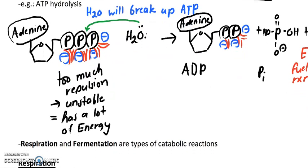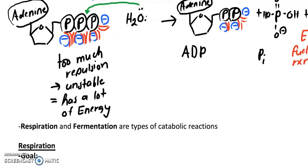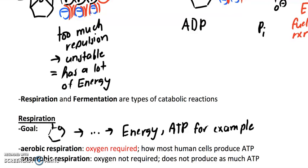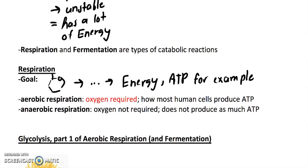Respiration and fermentation are types of catabolic reactions. The goal of respiration is to take glucose that we ingest and through a series of reactions make energy, you know, one form of that would be ATP. Two types of respiration: for aerobic, the important thing to know is that oxygen is required, and this is how we produce many molecules of ATP per glucose. Second type, anaerobic: oxygen is not required. This process does not produce as much ATP.